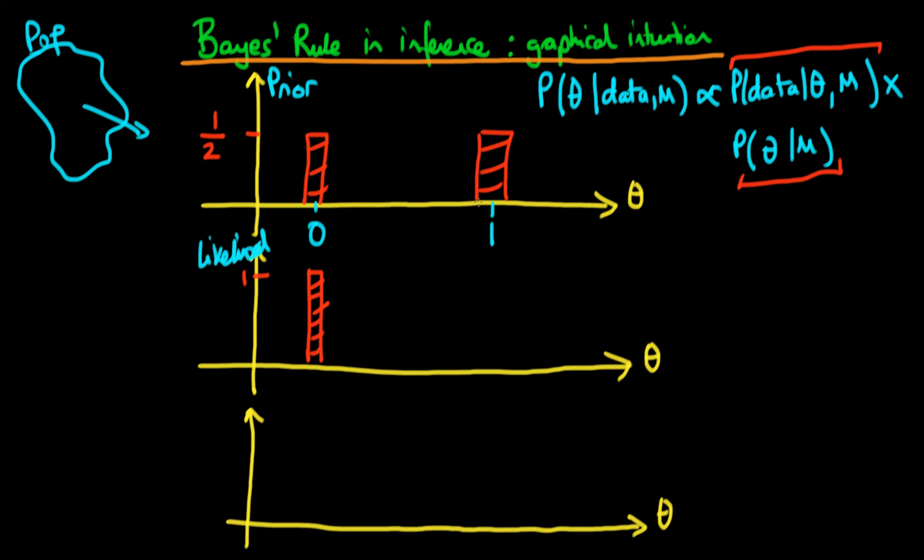And in the case where they do come from a tribe that has the disease, we worked out that the probability of all three of these individuals, if they randomly sampled from that population, all not having the disease would actually be relatively low. It would just be in this case one eighth.